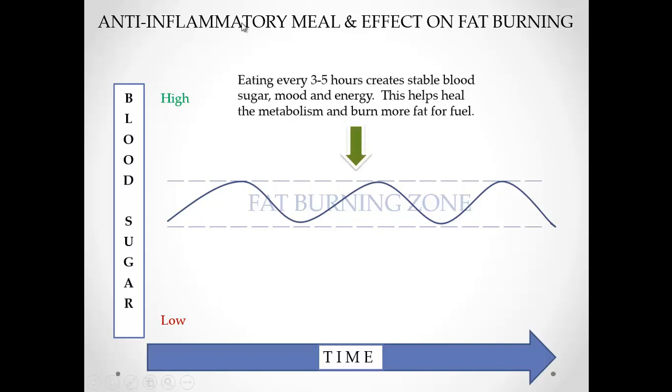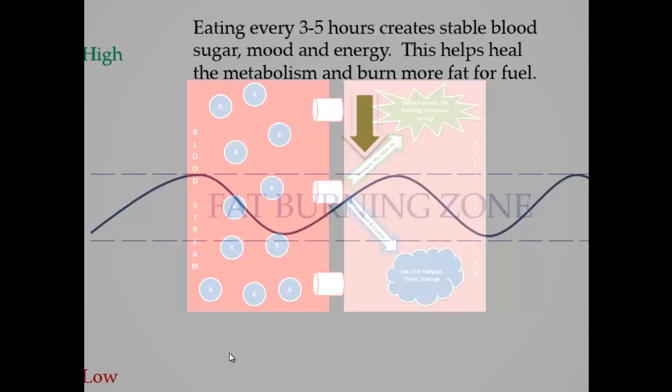Recapping, eating every three to five hours, stable blood sugar, better mood, better energy, this allows us to burn more fat for fuel. When we go inside of our body, what we see is this, we're making more glucagon, HSL is hormone-sensitive lipase, we're producing more growth hormone, and we're actually making more T3. T3 is our active thyroid hormone.